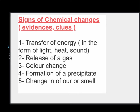These are some signs of chemical changes, and whenever you see these signs, it means that a chemical change is happening. Number one is a transfer of energy, and it can be something like production of light, production of heat, or even sometimes absorption of heat or production of sound.